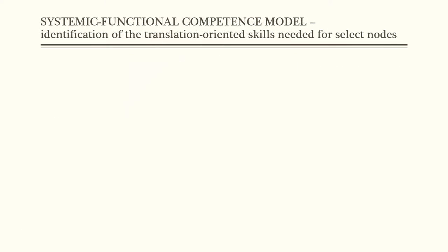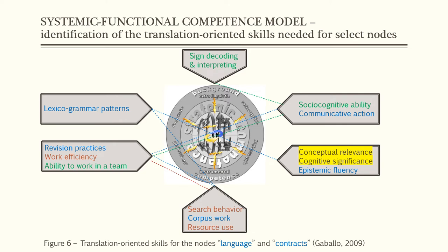Let's assume that, after analysing the conceptual relevance and cognitive significance of the subjects law and language, we've resolved that one of the main nodes for language and translation students is contract law and the language of contracts. How do we organise the teaching and learning activities according to a translation-oriented language pedagogy? First of all, we determine what items of individual competences we would like students to target, referring to the node 'language and contracts.' Starting from the epistemological competence, we determine what to teach in terms of concepts and methods of contract law and legal language, most relevant and significant to learners in both the linguistic and legal systems.